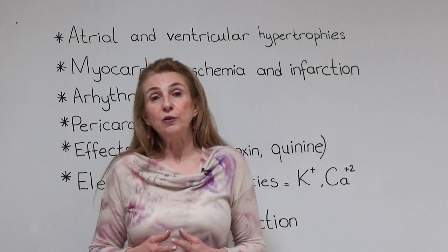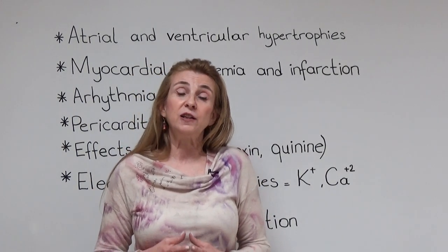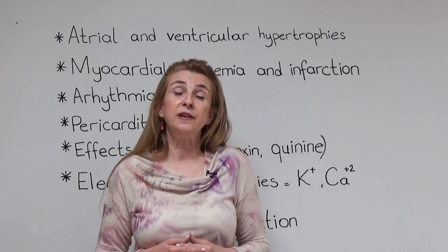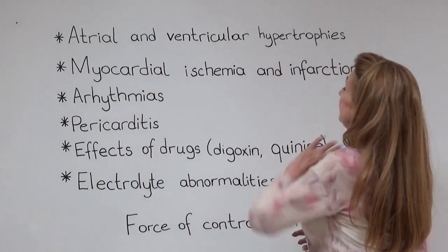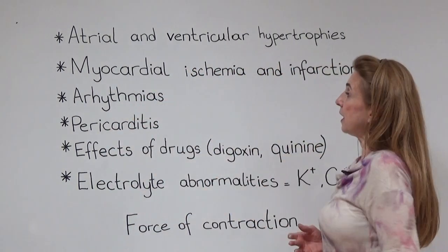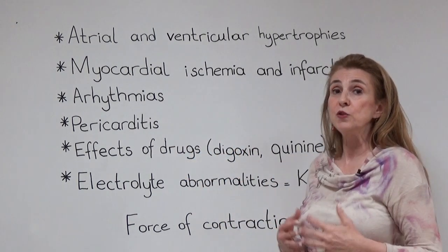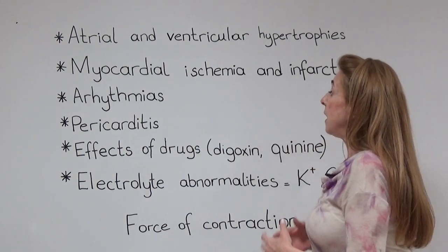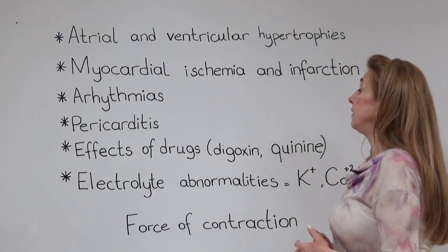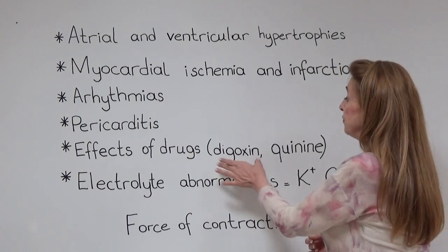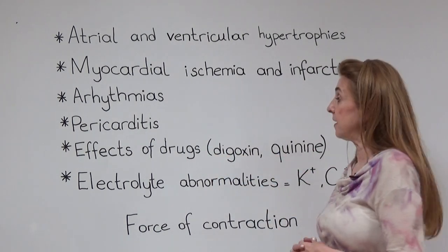So, what does electrocardiography reflect? Any condition that changes the electrical activity in the heart will be reflected in the electrocardiography. What are they? Atrial and ventricular hypertrophies, myocardial ischemia and infarction, arrhythmias, pericarditis can cause changes in electrocardiography. Some drugs have effects on electrical activity and therefore the electrocardiography. Digitalis drugs like digoxin, antimalarials like quinine, are classical examples of this.